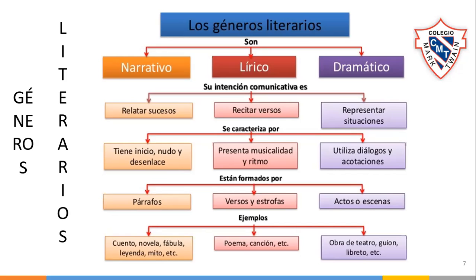En la parte lírica son oda, elegía, égloga, sátira, madrigal, himno — el himno nacional, por ejemplo. Y en lo dramático son las obras: tragedia, comedia, drama, farsa, sainete, ópera, zarzuela, entremés, auto sacramental — toda esta parte del género dramático.